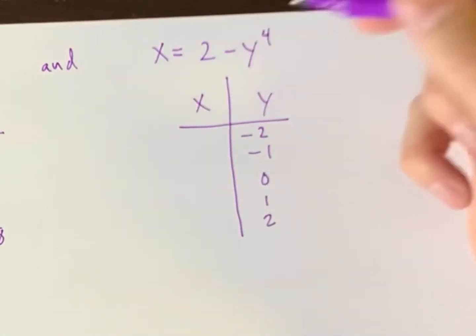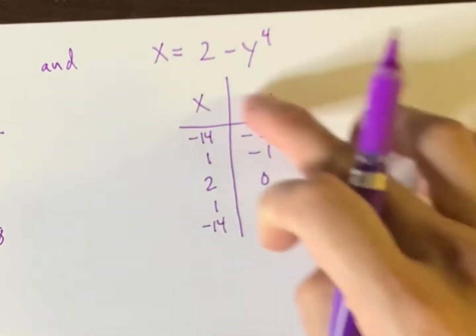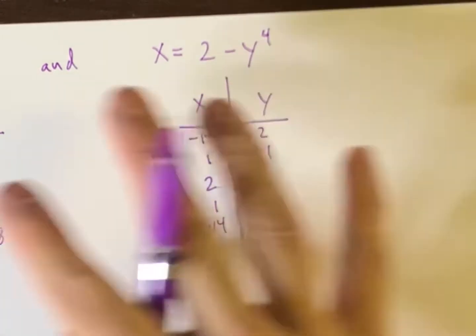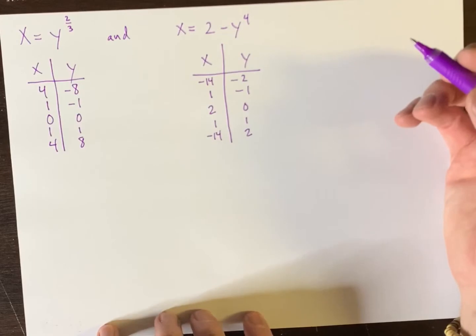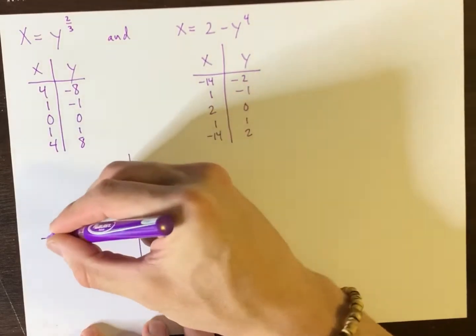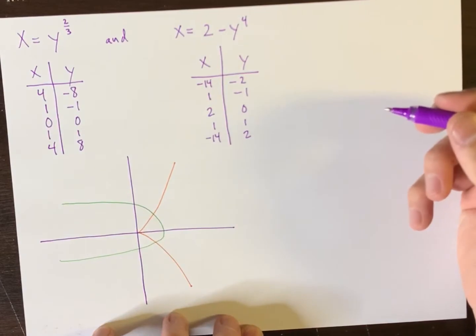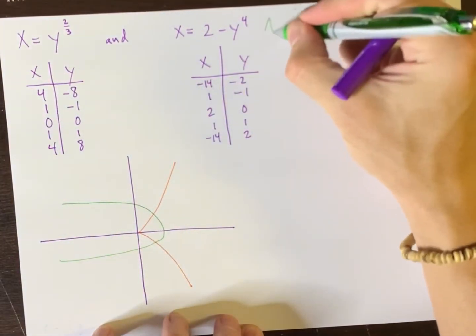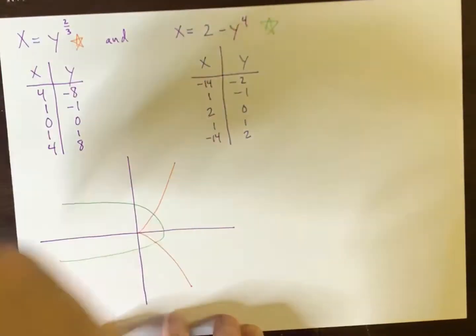Plug these in for y, and this is what you'll get for the x column. So this is what I got here. And if you were to graph all this data on the same Cartesian grid, the following is what you would see. They would look something like this, where the green function is this one here and the orange function is this one there.